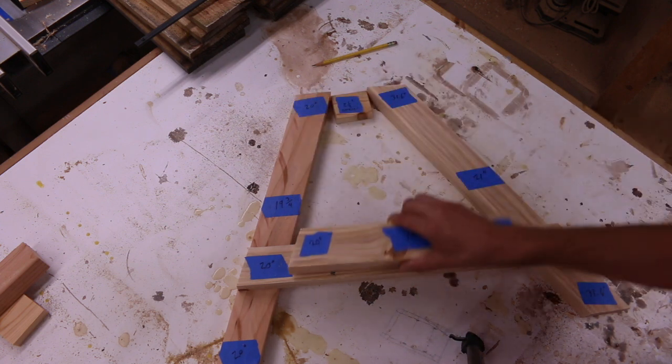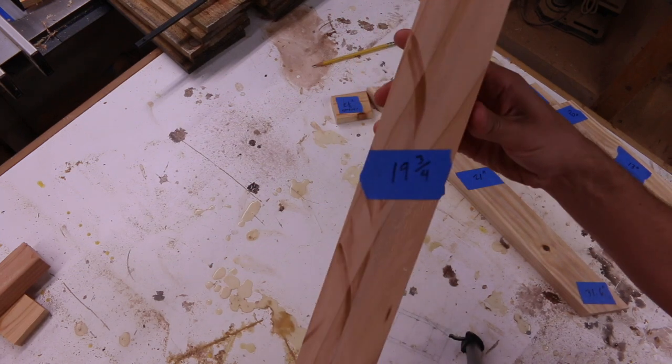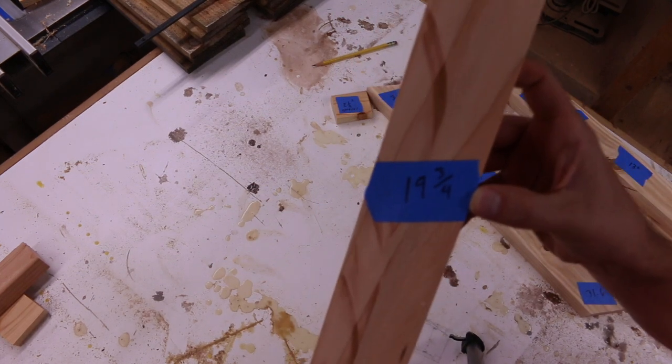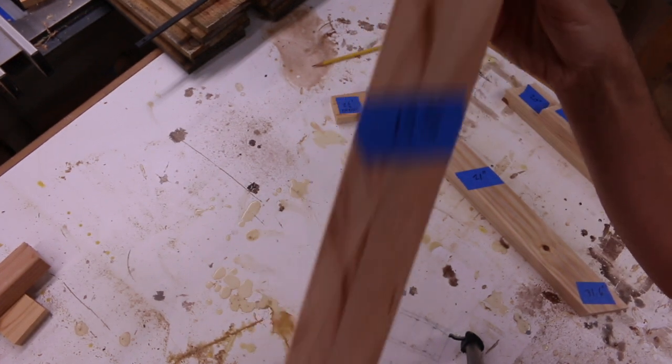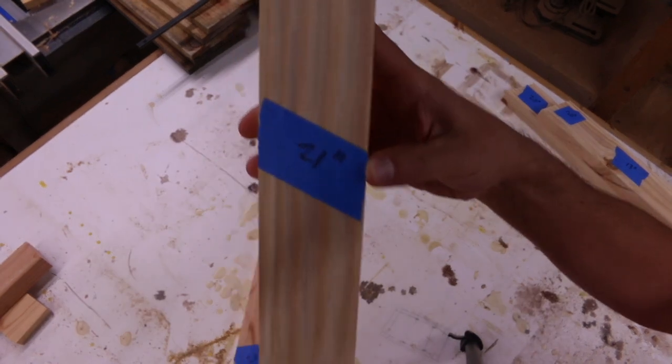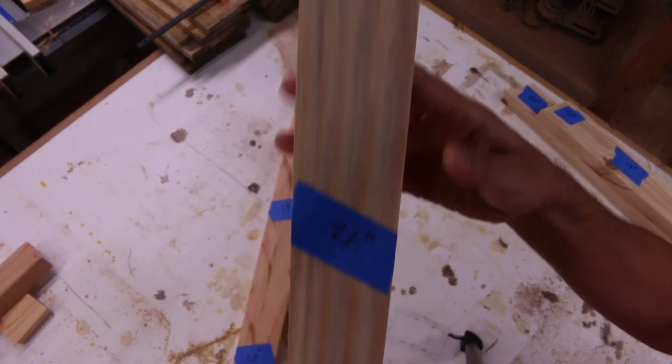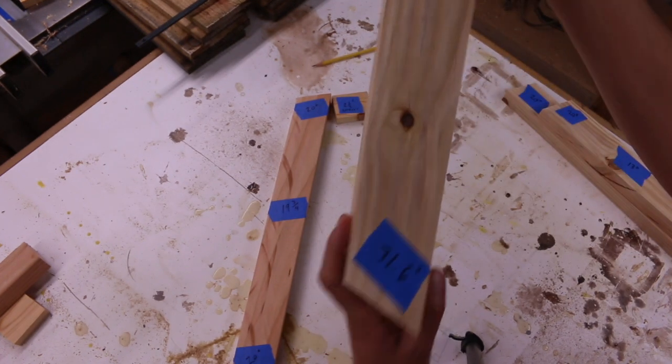These are the two cross pieces. The back leg of the back seat is 19 and three quarter inches in length with 20 degree angles on the bottom and the top. And the front leg of the back seat is 21 inches in length with 31.6 degree angles on the top and the bottom.